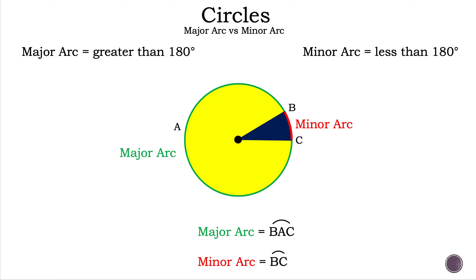Let's talk about what a major arc is. A major arc is an arc that is greater than 180 degrees. Let's talk about how we write it — we use three letters and we use the arc symbol above it. In this case, our major arc is the green section around the circumference, and our major arc is arc BAC.